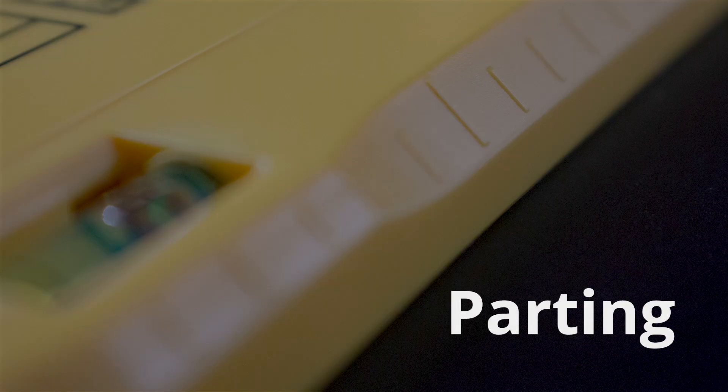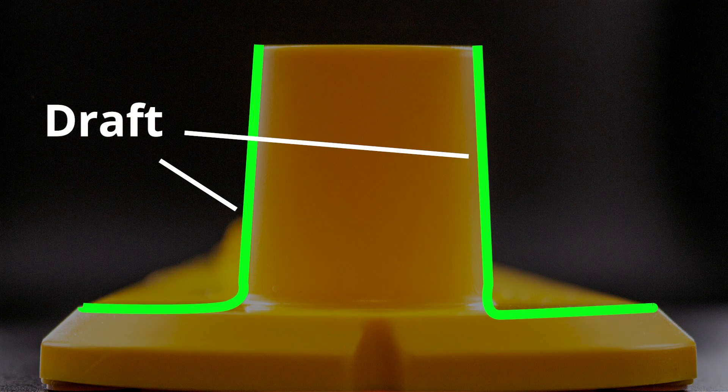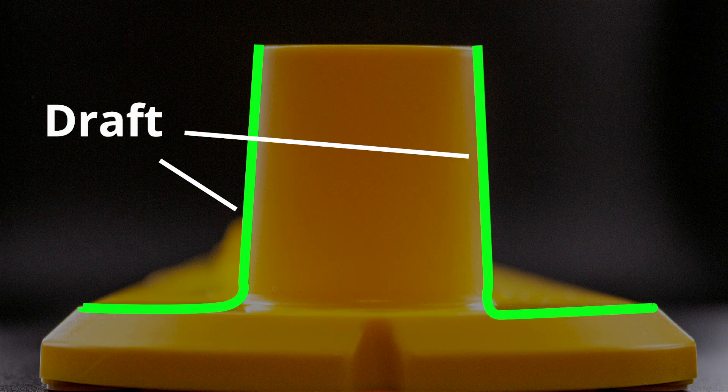Parting will describe the tool construction for where to expect a parting line. This is important for describing where draft angles may be required as well as where you may see small seams on your manufactured parts.